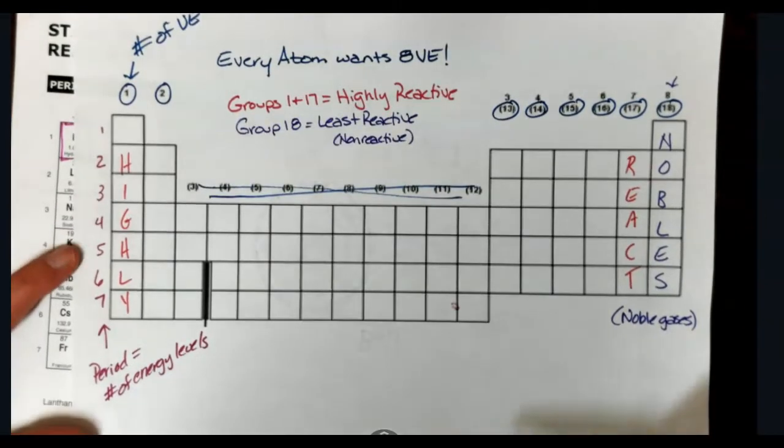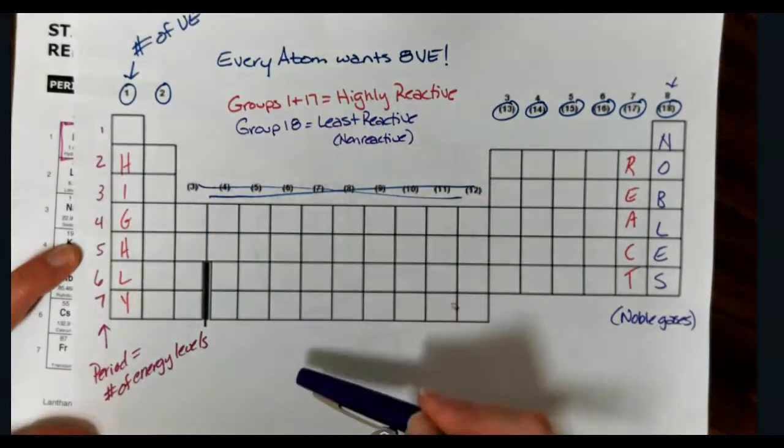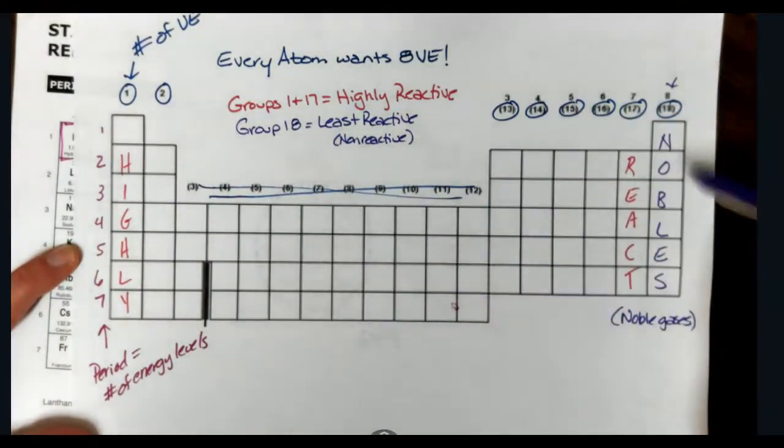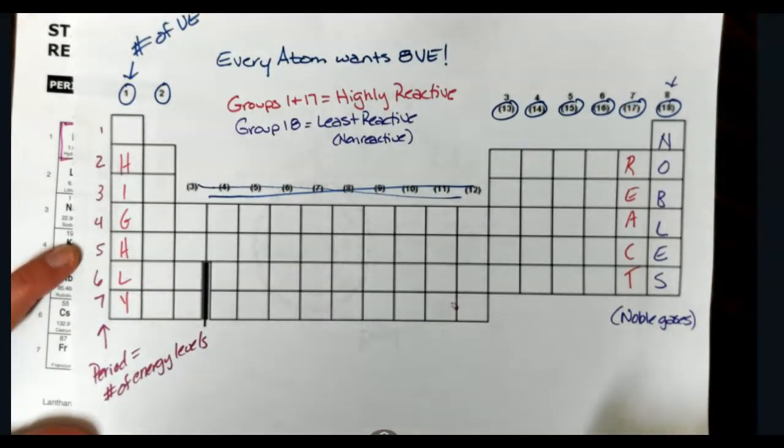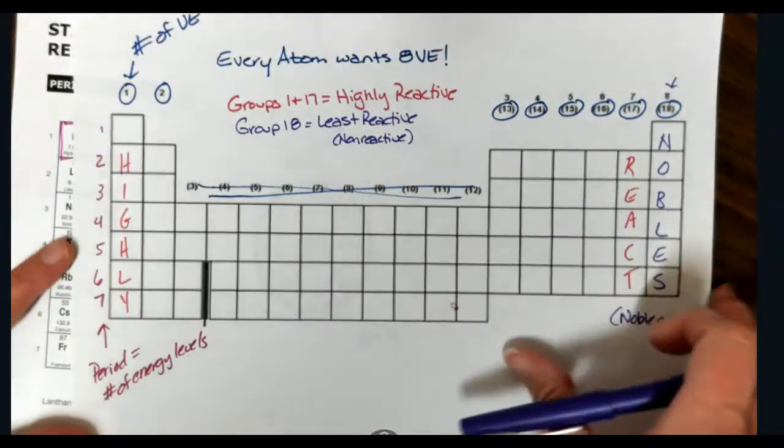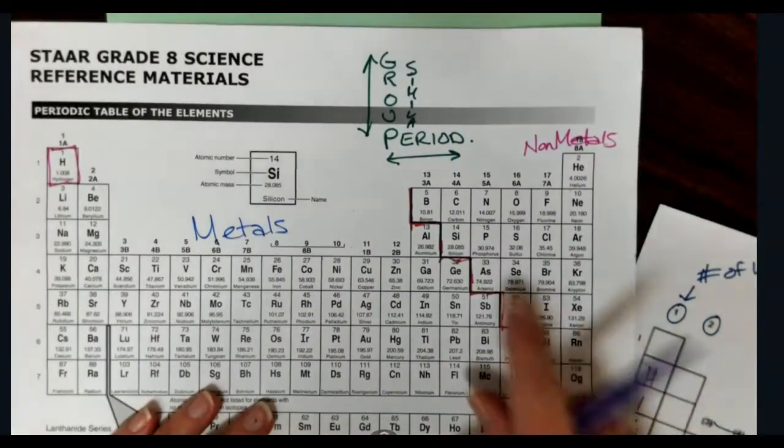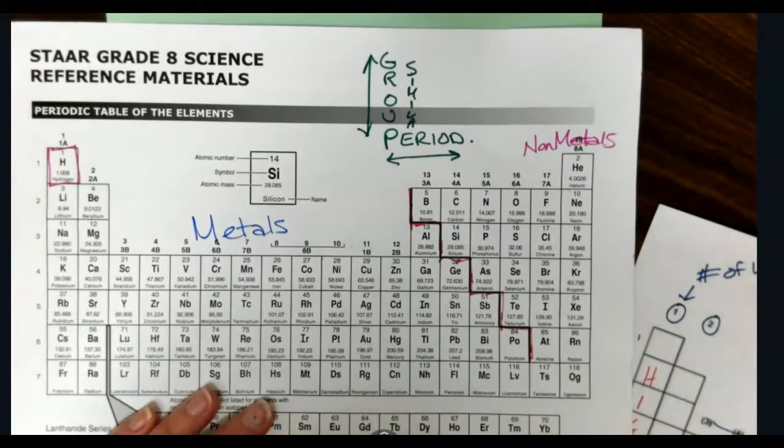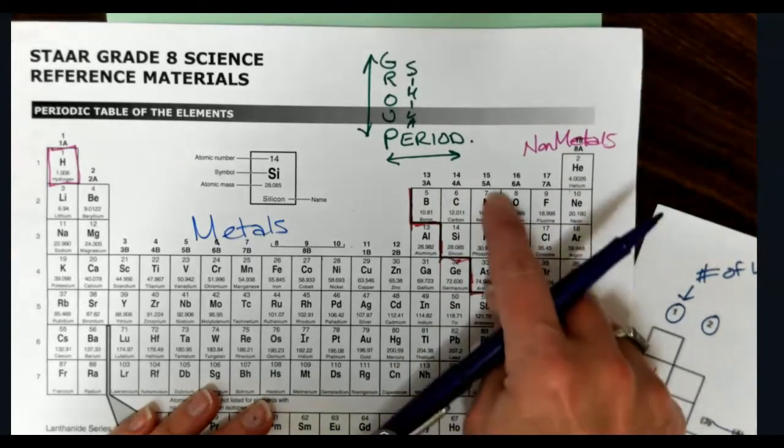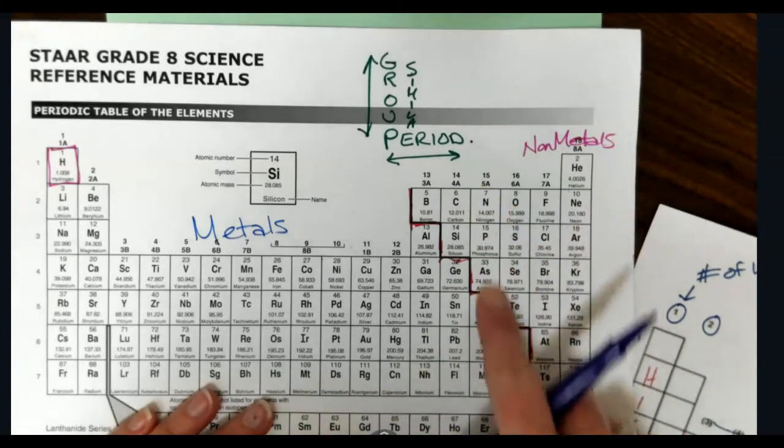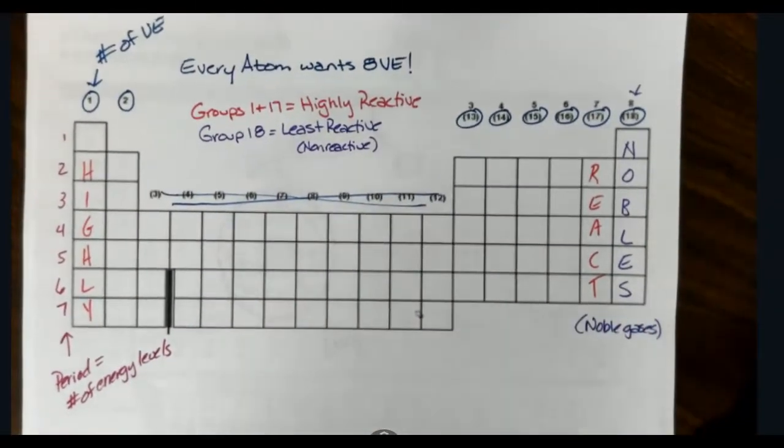So when we look at the periodic table, the group number is going to reference the number of valence electrons for groups 1 and 2 and 13 through 18. These guys in the middle are the transition metals. The rules don't apply. So if we look at the number at the top, so if I go back to my periodic table, the number at the top, 14, so this is group 14, look right below that, it says 4A, 4 valence electrons. Group 15, 5A, 5 valence electrons. So you can predict the number of valence electrons based on what group it's in.